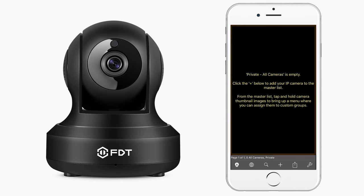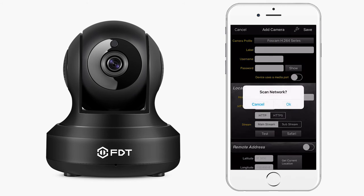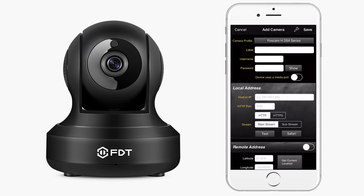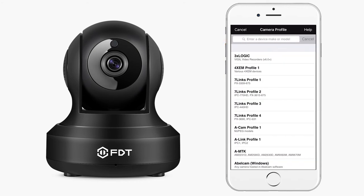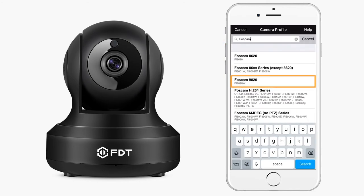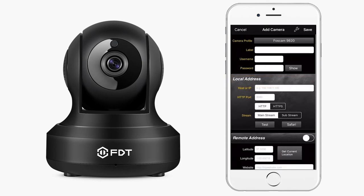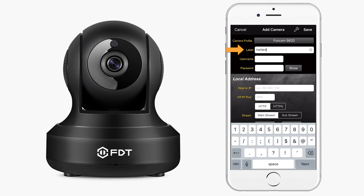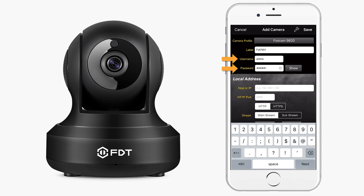In order to add your camera, tap on the plus icon located in the main menu. A pop-up window will prompt you to scan network — tap Cancel. On the Add Camera screen, change the camera profile from the list and select FOSCAM9820. Then you can begin filling out the following fields. In the Label field, give your camera a name. In the Username and Password fields, type in your camera's login information. This is the same login you used to access the camera's FDT Web UI.